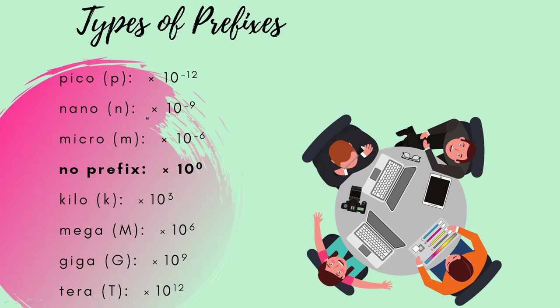And then here we have the types of prefixes. These are the types of prefixes that I use in physics. The common ones are usually nano, micro, kilo - sometimes you get mega. So these are the four common ones in here: nano, micro, kilo, and mega. You need to remember them. Just remember pico is 10 to the negative 12, nano is 10 to the negative 9, micro 10 to the negative 6, kilo 10 to the positive 3, mega 10 to the 6, giga 10 to the 9, and tera 10 to the 12.